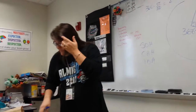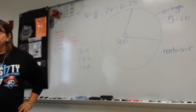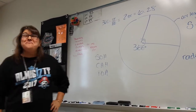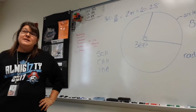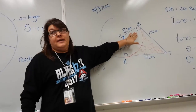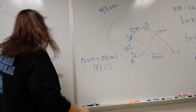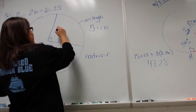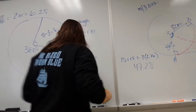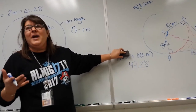Now it says find the area of the shaded region. We find the area of the kite and then subtract the sector — which we know is the pizza. The area of the kite: it's one-half base times height times two, or just 8 times 15 — that's the kite itself. Then minus one-half R squared theta, which is the area of the piece of pizza.